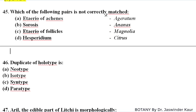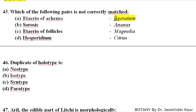Which of the following pairs is not correctly matched? Ageratum with achene — Ageratum does not have achene; the fruit type in Ageratum is cypsela. This is the incorrect match. Sorosis is the fruit of Ananas, etaerio of follicles is the fruit of Magnolia, and hesperidium is the fruit in Citrus.